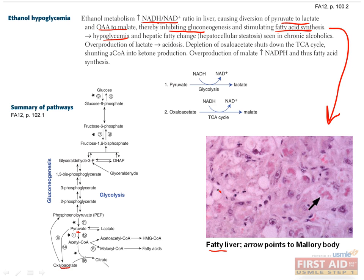The fat cell infiltrates appear as white blobs in the image, and the red structures are Mallory bodies. Mallory bodies are made of keratin and are common in alcoholic hepatitis and cirrhosis, but can also be seen in Wilson's disease, primary biliary cirrhosis, and hepatocellular carcinoma.